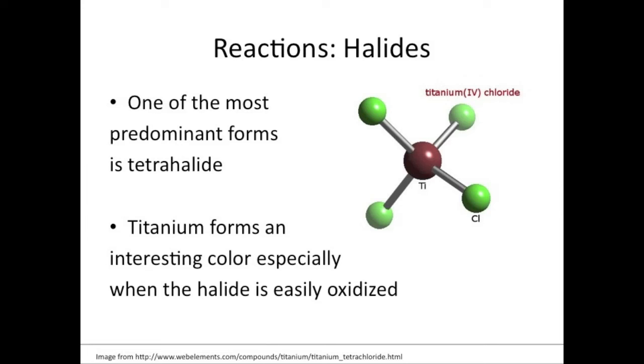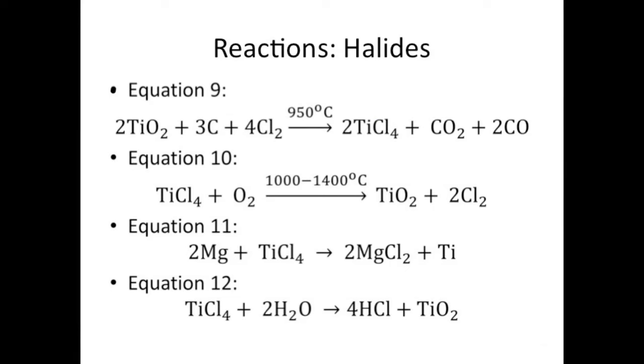Titanium 3 sulfide also forms by heating titanium disulfide. One of the most predominant forms is tetrahalide. Titanium forms an interesting color especially when the halide is easily oxidized. Titanium tetrachloride forms by reducing ilmenite with carbon at 950 degrees Celsius and thus producing carbon monoxide as the byproduct. Titanium tetrachloride reacts with magnesium to produce titanium metal and magnesium chloride. The magnesium reduces the chloride in this equation.